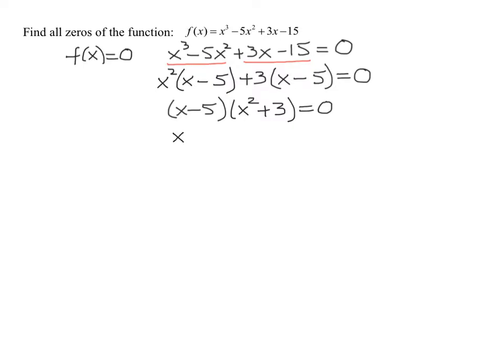So we're going to set each of them equal to zero and solve the resulting equations. On the first one I need to add five to both sides. So I'm going to get x equals five. There's one of my solutions.